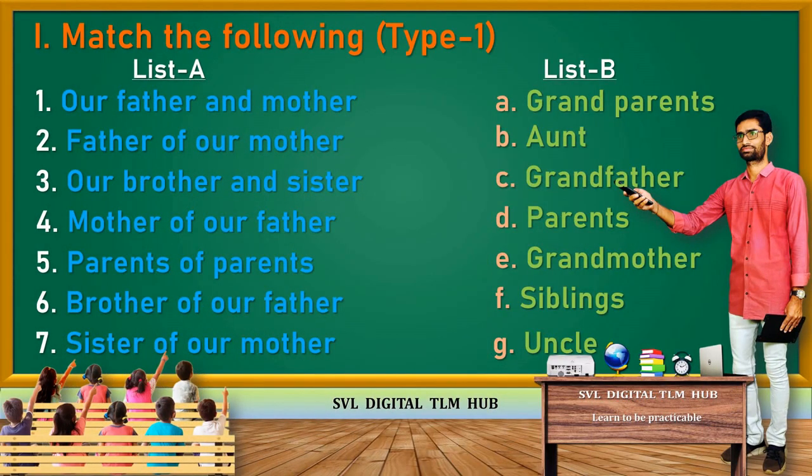Let's do the matching. First one: Our Father and Mother — Parents. Amma, Nana — Parents. First one, D. Match.